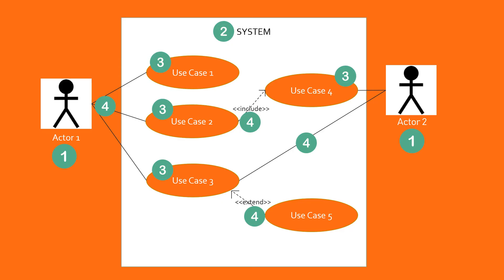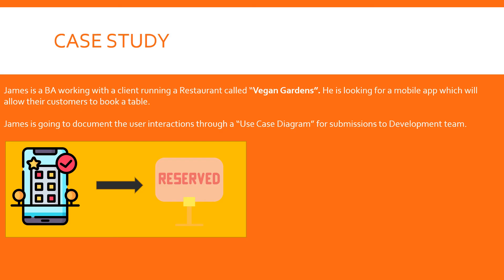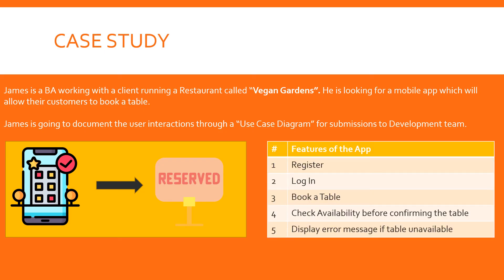Next, let's build a use case diagram for a case study. James is a VA working with a client running a restaurant called Vacant Gardens. The client is looking for a mobile app that will allow their customers to book a table. James is going to document the user interactions through a use case diagram for submission to the development team. The features requested are: customers can register, log in, and use the app to book a table. The app should check for table availability before confirming, and display an error message if the table is unavailable.